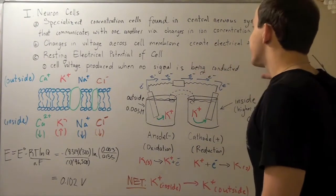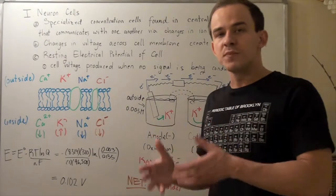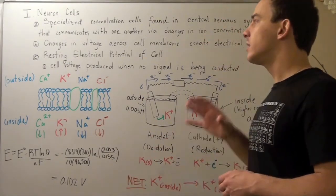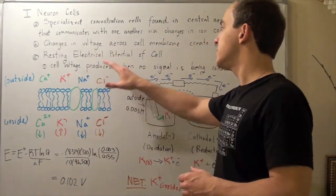These electrical signals travel from one cell to another and this is how cells communicate. Now, let's look at something called a resting electrical potential of a cell.